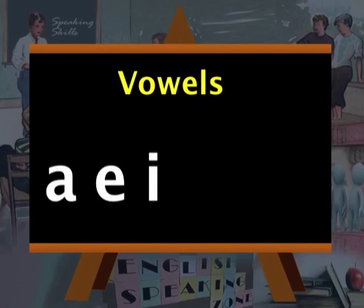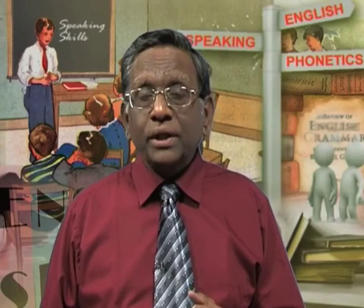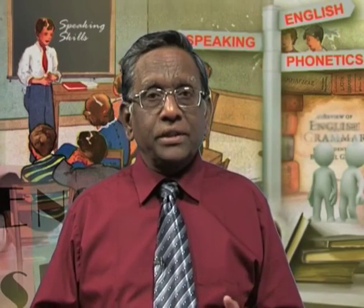In this session, we have talked about the English vowels, which constitute one ingredient of the segmental features of the spoken medium of English. In the next session, we'll be dealing with consonant phonemes — how many consonant sounds there are in English, how they differ from the consonants we are familiar with, and how we have to take care of them.